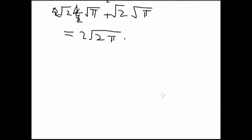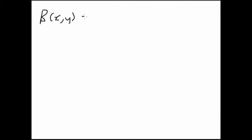Now I'm going to explain what the beta function is. The beta function is defined as a two-variable function: B(x,y) = ∫₀¹ t^(x-1) · (1-t)^(y-1) dt.